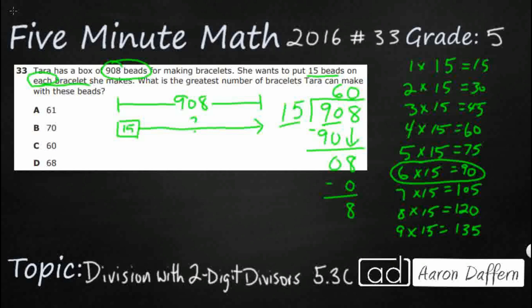Take a look at how they phrase this problem. What is the greatest number of bracelets that she can make with these beads? That lets me know that the people that wrote this problem, they knew it wasn't going to go evenly. So we are supposed to interpret this remainder, because I've got 60, remainder 8.